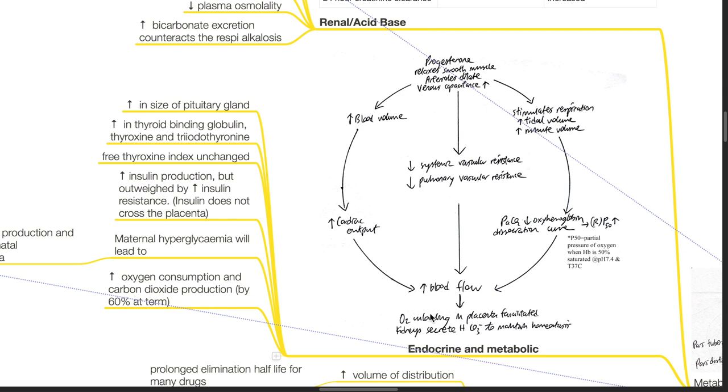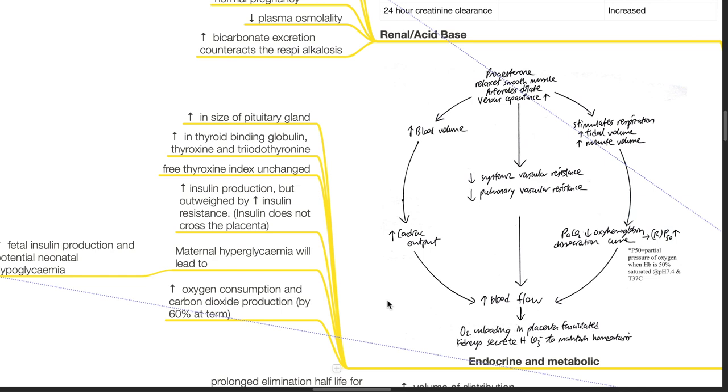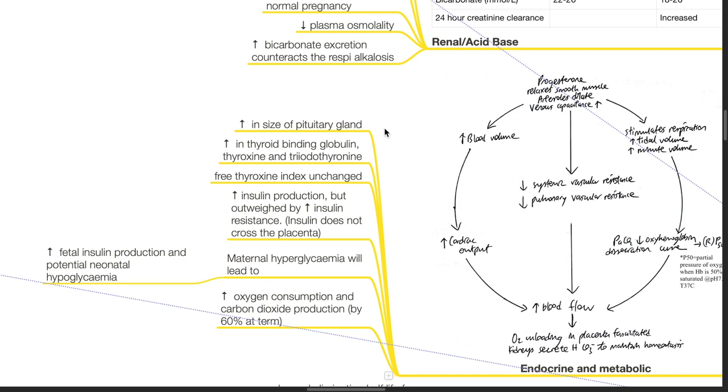Kidneys excrete bicarbonate to maintain homeostasis. Progesterone stimulates respiration, increasing tidal volume and minute volume. PaCO2 decreases, the oxyhemoglobin dissociation curve shifts with P50 changes, facilitating oxygen unloading in the placenta. Decreased systemic and pulmonary vascular resistance increase blood flow and oxygen delivery to the fetus. The pituitary gland enlarges. Thyroid-binding globulin, thyroxine, and triiodothyronine increase.